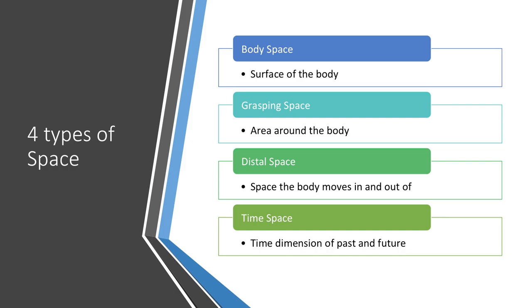We can break space up into four subspaces. The first one is body space — everything on your body, such as where your clothing is. Another subspace is grasping space, which is the space closely around your body, everywhere you can reach with your arms or move your legs into. Right outside of that is distal space, which is a space your body can move into or out of. And the last one is time space — the past, present, and future. We need time space for auto-noetic awareness, which is the self-knowledge that allows someone to bind together the awareness of oneself as a continuous entity through time.